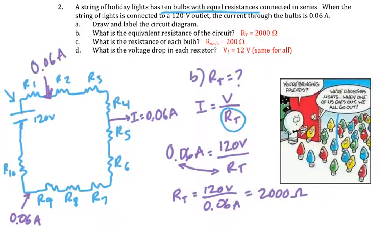For letter D, the reminder for voltage drop is Vn equals I times Rn. For each one, you're going to use 0.06 for I and 200 for Rn. The voltage will be split up evenly across this chain since all of the resistors are also equal.